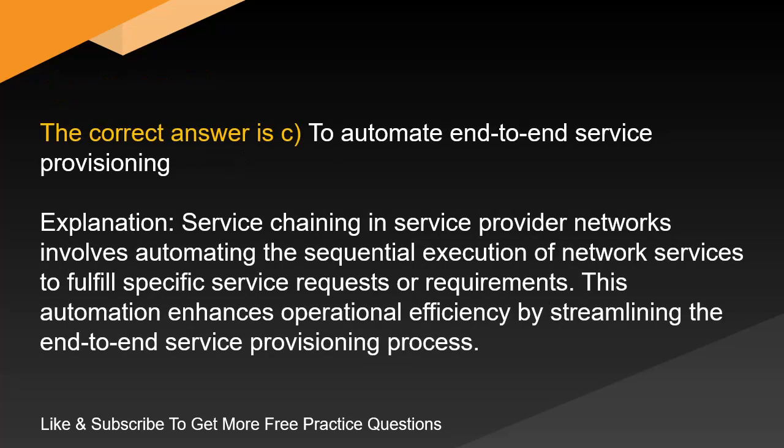The correct answer is C. To automate end-to-end service provisioning. Explanation: Service chaining in service provider networks involves automating the sequential execution of network services to fulfill specific service requests or requirements. This automation enhances operational efficiency by streamlining the end-to-end service provisioning process.